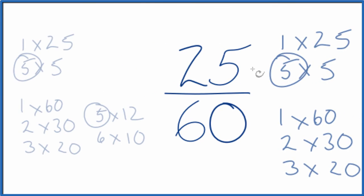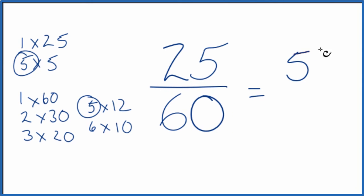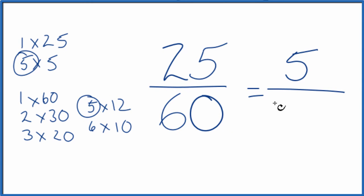Let's move this over here. So 25 divided by 5, that is 5. And then 60 divided by 5 is 12. And we've simplified 25/60 down to 5/12.